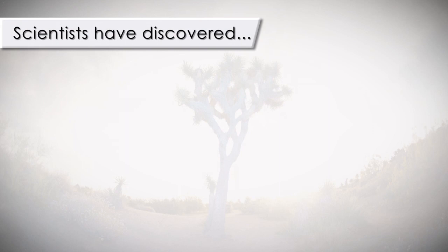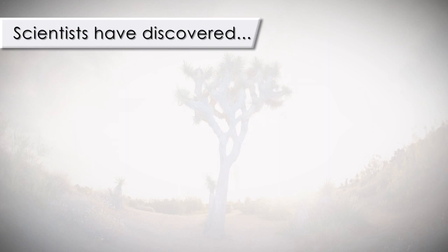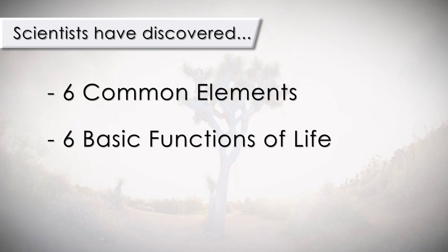So far, scientists have discovered that there are six common elements that make all life possible on this planet, and that all living organisms here must satisfy six basic functions of life, if they are to sustain life throughout its assigned life cycle.